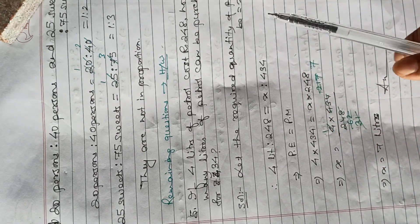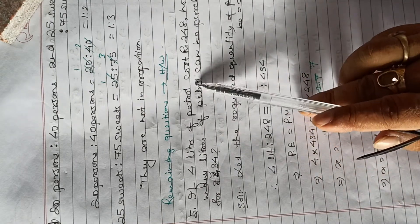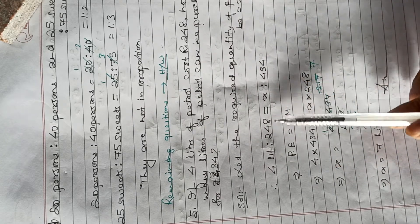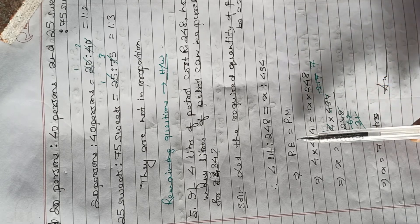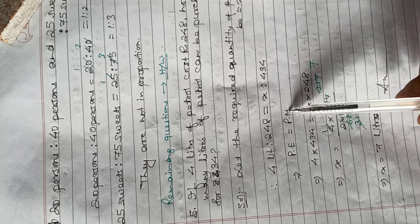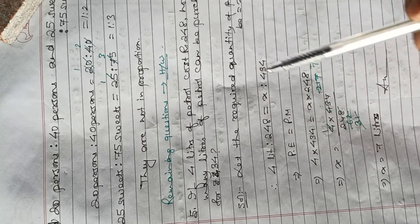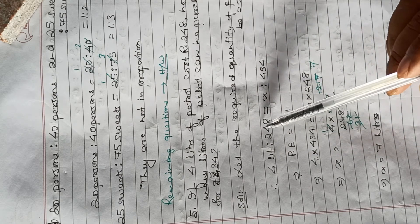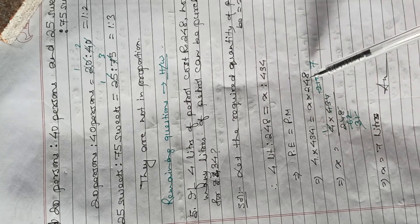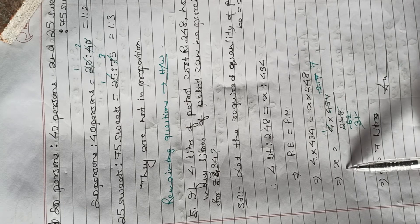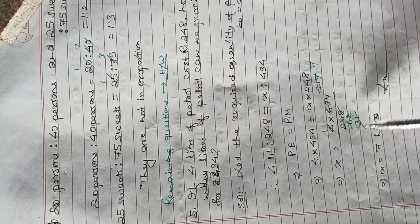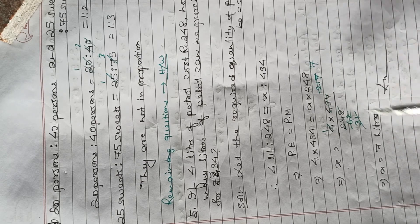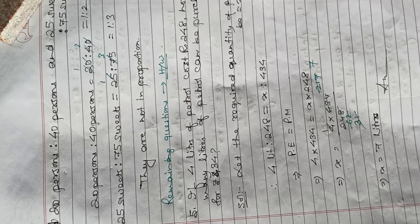4 liters is to rupees 248, and x liters is to rupees 434. Using product of extremes equals product of means: 4 into 434 equals 248 into x. So x equals 4 into 434 divided by 248. On calculation and cancellation, we get x equals 7. The required answer is 7 liters.